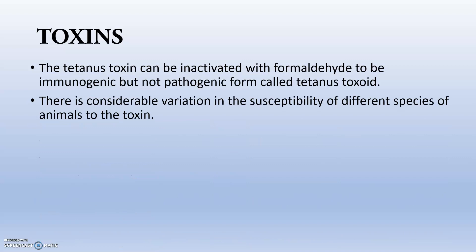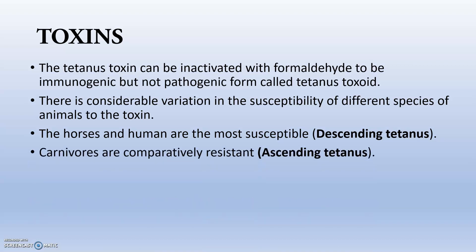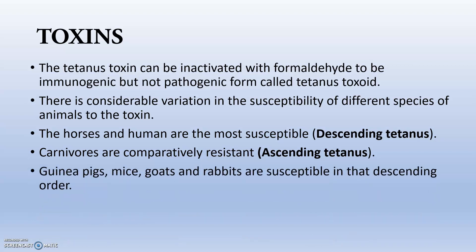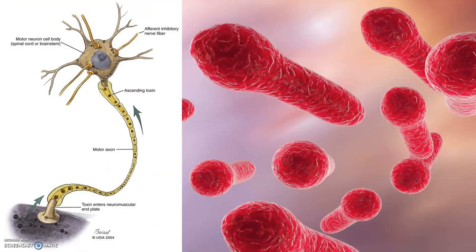Horses and humans are most susceptible to descending tetanus. Carnivores are comparatively resistant, and if they do get tetanus it is mainly ascending tetanus. Guinea pigs, mice, goats, and rabbits are susceptible in descending order. Birds and reptiles are highly resistant. This illustration shows ascending tetanus and the drumstick appearance of Clostridium tetani.